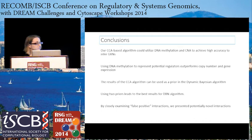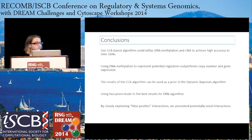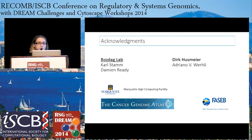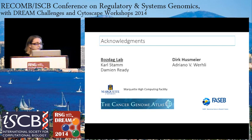In conclusion, our CCA-based algorithm can utilize DNA methylation or copy number to achieve high accuracy in inferring gene regulatory networks. Using DNA methylation to represent potential regulators outperforms copy number and gene expression in most cases. The CCA results can be used as a prior in the dynamic Bayesian network algorithm, and using two priors leads to the best DBN results. By examining false positive interactions, we also identified potentially novel interactions. We thank Dr. Bozda, lab members Carl Stamm and Damien Reddy, Derek Hussmeyer and Adrian Oberle for their methodology, Marquette's high-performance computing facility, the Cancer Genome Atlas, and the FASMA-MARC program for the travel award.